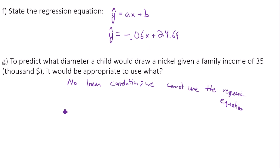Instead, the best estimate anytime linear correlation doesn't hold true is to use the mean y value. In this case, that would be the mean coin size. That would be the best estimate for how big a child would draw the diameter of a nickel given a family income of $35,000. So that's how you conduct a hypothesis test for linear correlation.